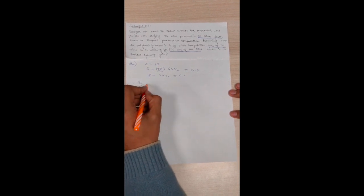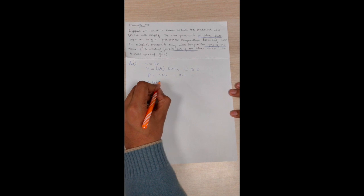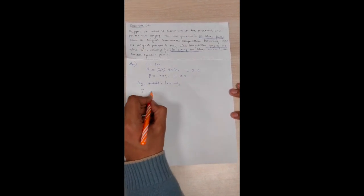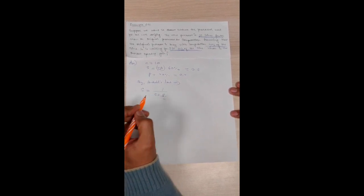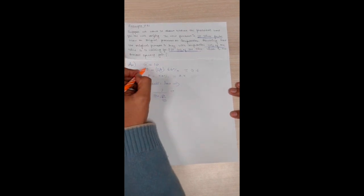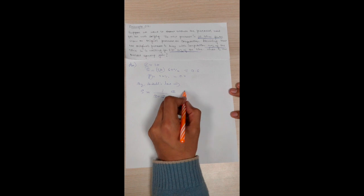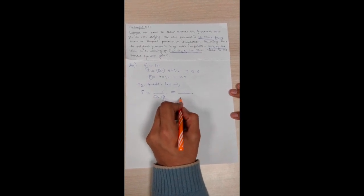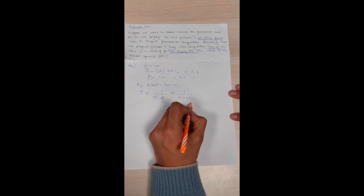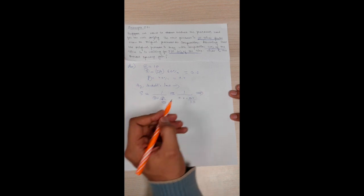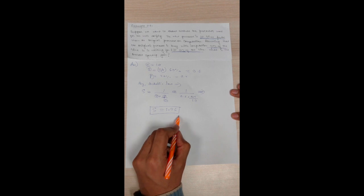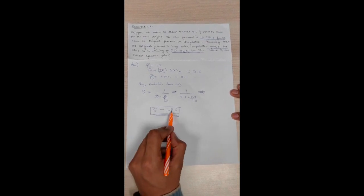Now by using Amdahl's law, I know the formula. Speed up equals 1 upon (serial instruction + parallel instruction / number of cores). And by putting these values in these equations, S, P, and C from here, I can draw the formula and type this into an equation: 1 upon (0.6 + 0.4/10). And by calculating it, I get to a conclusion that speed up equals 1.56. This makes us conclude that the overall speed up gain is 1.56.